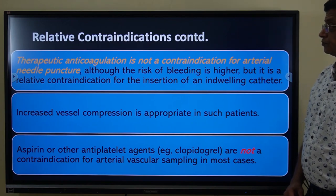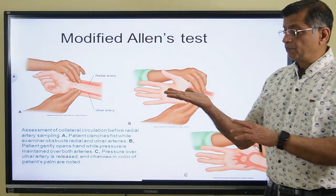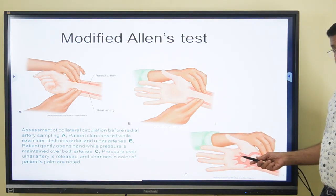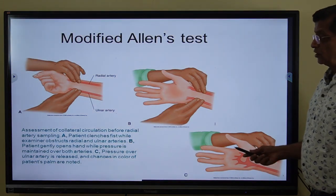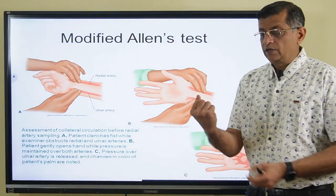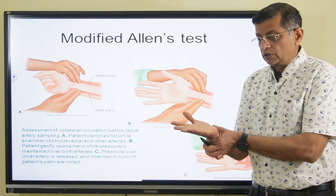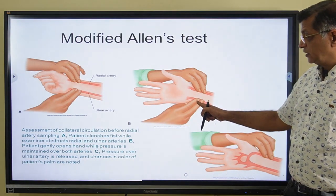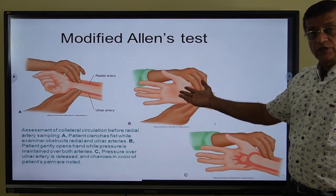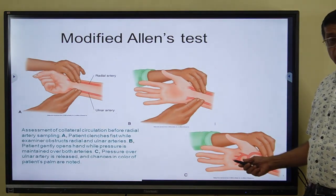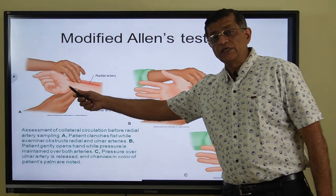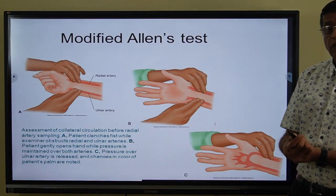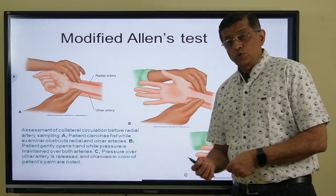The modified Allen's test: the hand is supplied by two arteries — the ulnar artery from the medial aspect and the radial artery from the lateral aspect — which together form the palmar arch. In the test, both arteries are pressed while the fist is closed until the hand becomes blanched and looks white. Then the ulnar artery is released. If the hand immediately turns pink, the palmar arch is patent and you can safely take a radial sample.